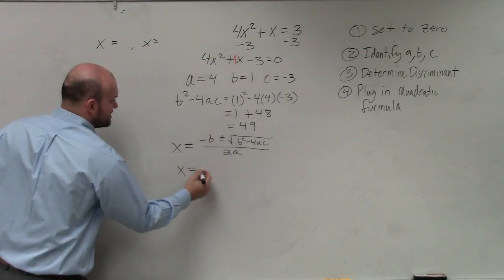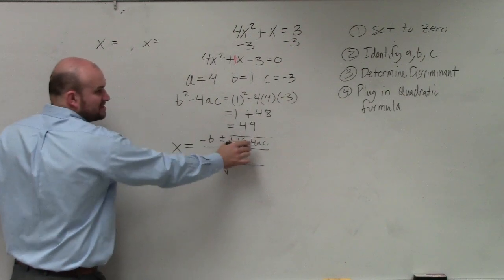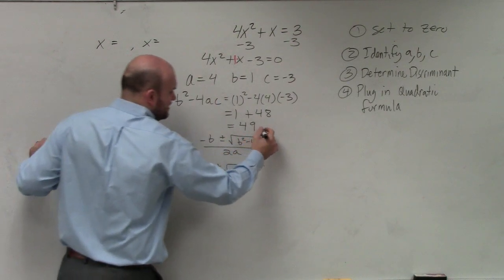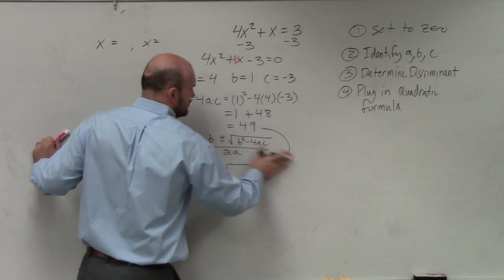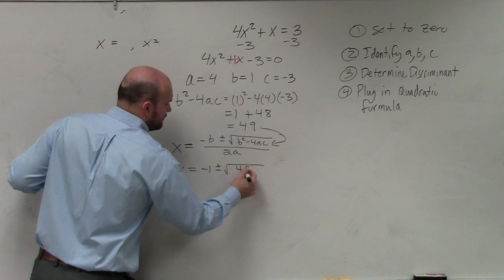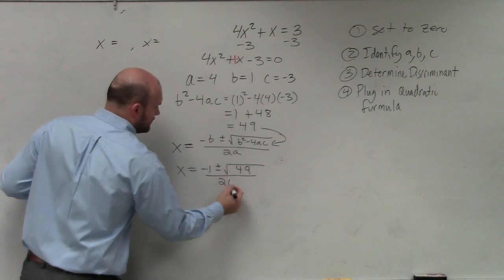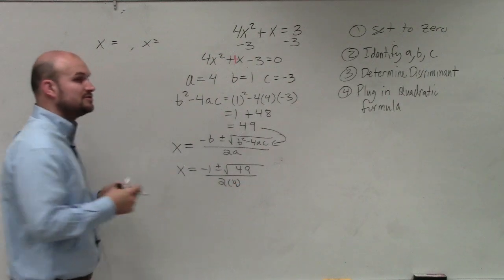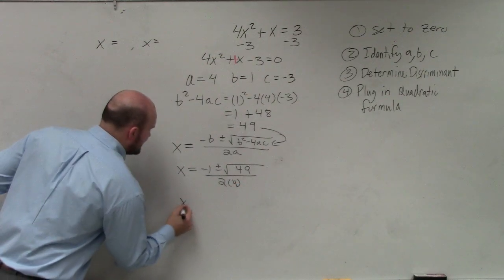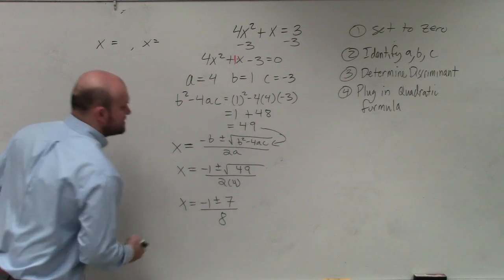Opposite of b. b is 1, so that's going to be negative 1. Plus or minus square root of b squared minus 4 times a times c. Well, that's just going to be the square root of 49, all over 2 times a, which is 4. So x equals negative 1 plus or minus 7 divided by 8.